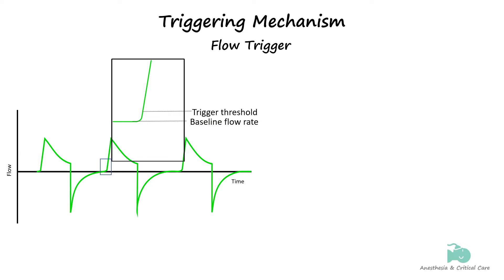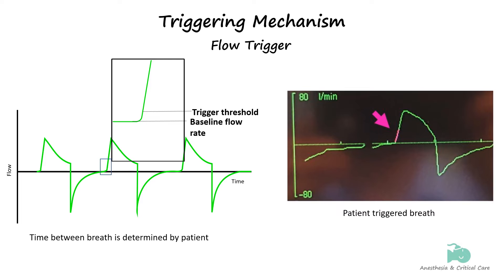Basically, in flow triggering, the patient has to generate a certain flow rate from baseline to reach the threshold set by the manufacturers or clinicians to trigger the breath. This means that the patient determines how many breaths he or she receives. In real time, the ventilator will also alert you to the fact that the patient made a spontaneous respiratory effort by coloring the waveform.